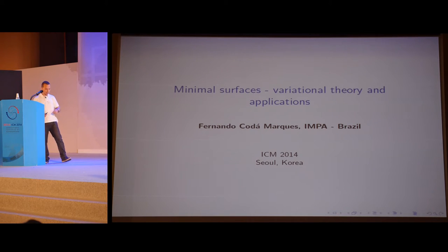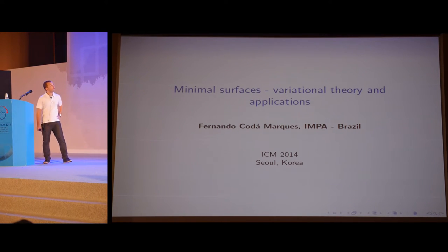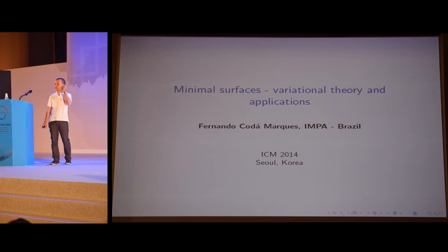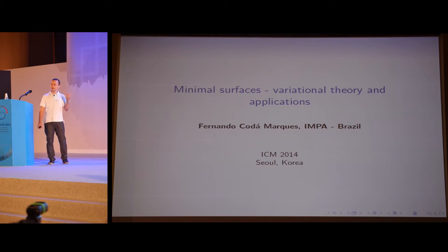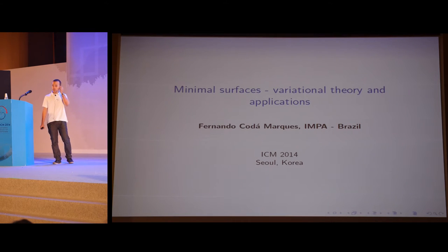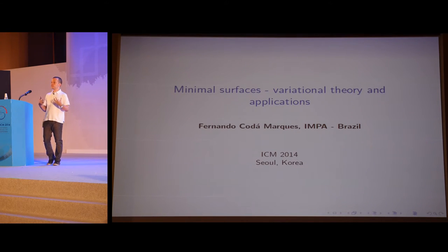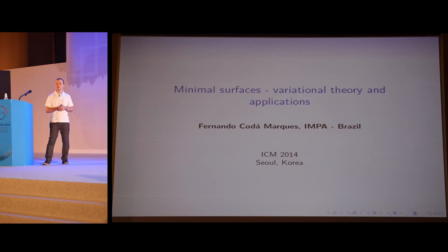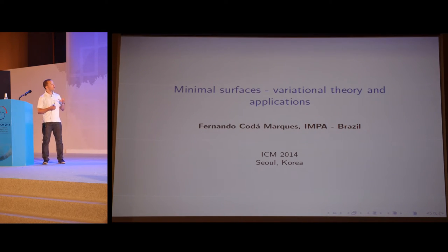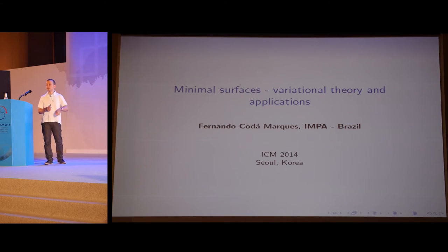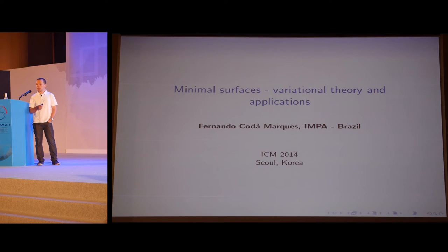Today I'm going to talk about an old subject in differential geometry, namely the subject of minimal surfaces. Minimal surfaces are among the most natural objects in geometry, and they have been studied for the past 250 years, ever since the pioneering work of Lagrange. It's a subject marked by a profound beauty. But perhaps even more remarkably, minimal surfaces or minimal submanifolds in general are fundamental tools in the solution of various problems coming from different fields, like three-manifold topology, mathematical physics, conformal geometry, and so on. My goal today will be to describe recent advances in the variational theory of these objects, with emphasis on applications to other domains.